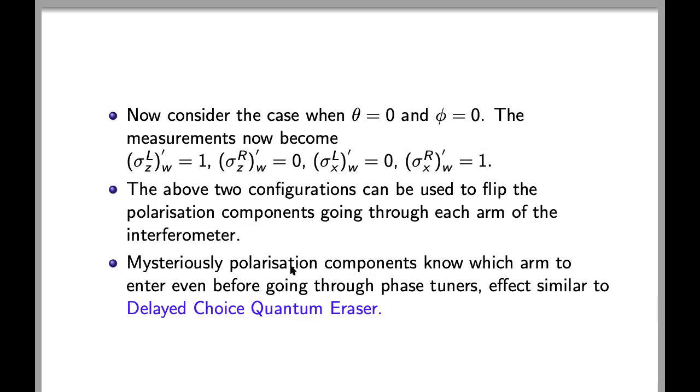Mysteriously, polarization components know which arm to enter even before going through the phase tuners. This effect is similar to the delayed choice quantum eraser, in which we can see that both past and future events affect the present.